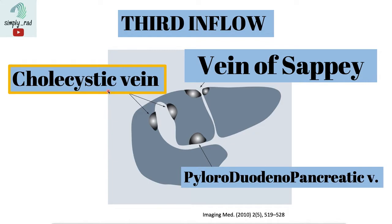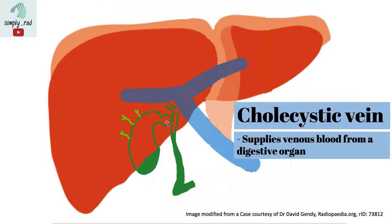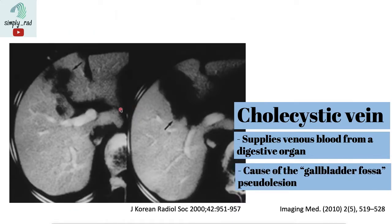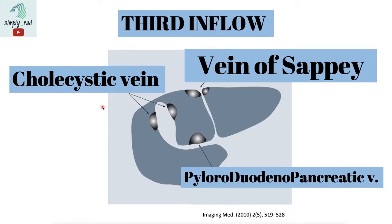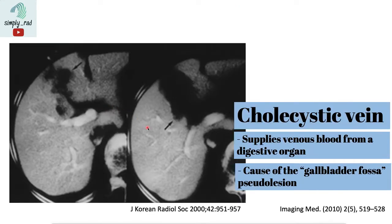Aside from the vein of Sappey, another third inflow vessel is the cholecystic vein. The cholecystic vein drains blood from the gallbladder directly into the liver, and this is the cause of the gallbladder fossa pseudolesion. One can also imagine that if the gallbladder is inflamed, there will be increased blood flow in that area, increasing flow through the cholecystic vein and creating a possible increase in enhancement in the gallbladder fossa.